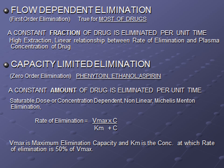Knowledge of the kinetics of elimination of a drug provides the basis for designing rational dosage regimens and modifying them according to individual needs. There are three fundamental pharmacokinetic parameters: bioavailability, volume of distribution, and clearance. There are two kinds of elimination: first-order elimination and zero-order elimination.